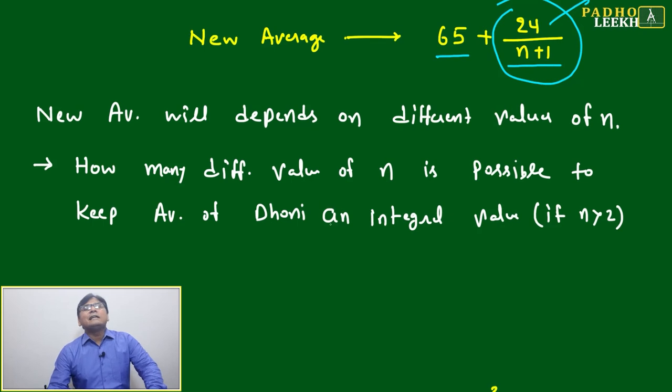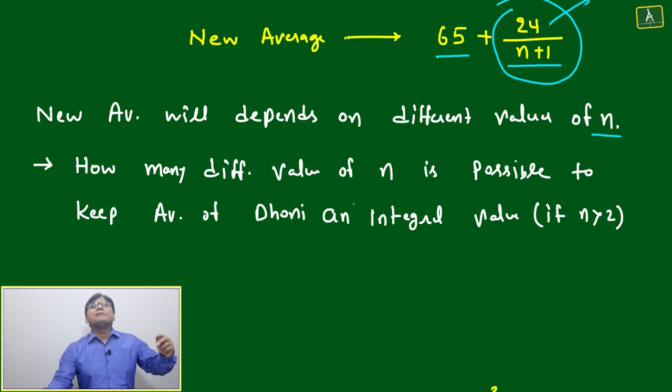Now I am converting this in a logical way. The new average will depend on different values of n. If the number of innings are different, then we will get different values of average and different distribution of the numbers.